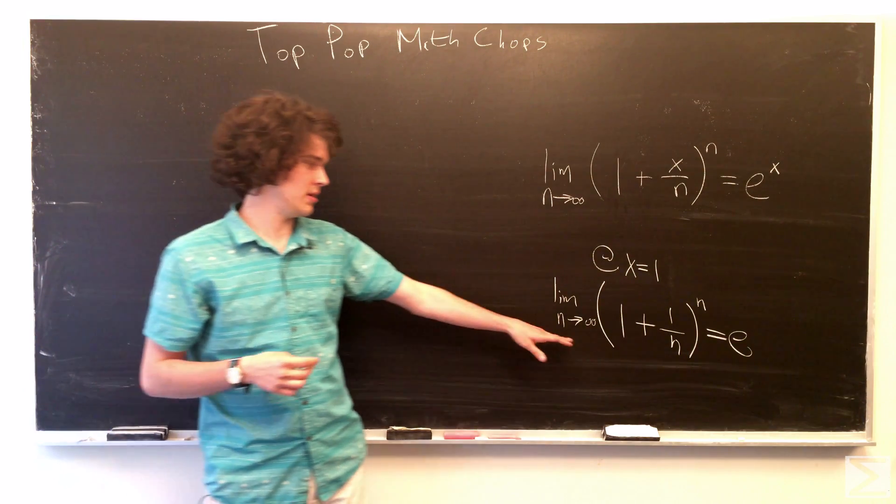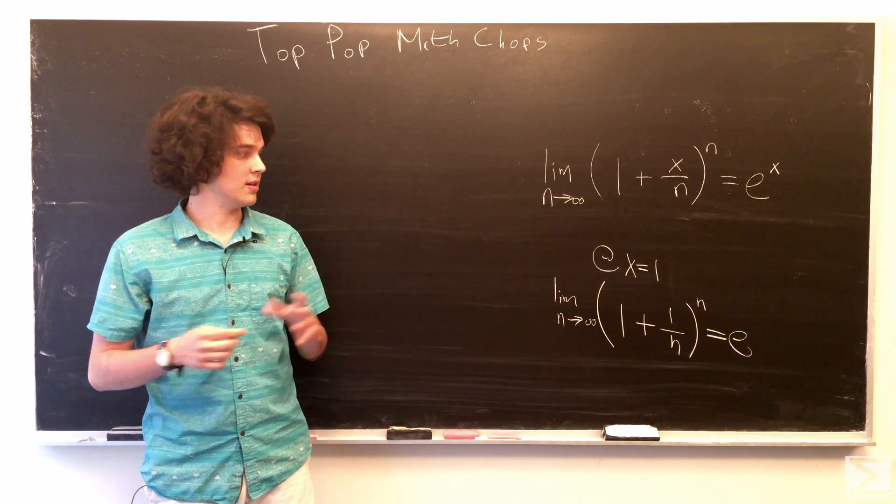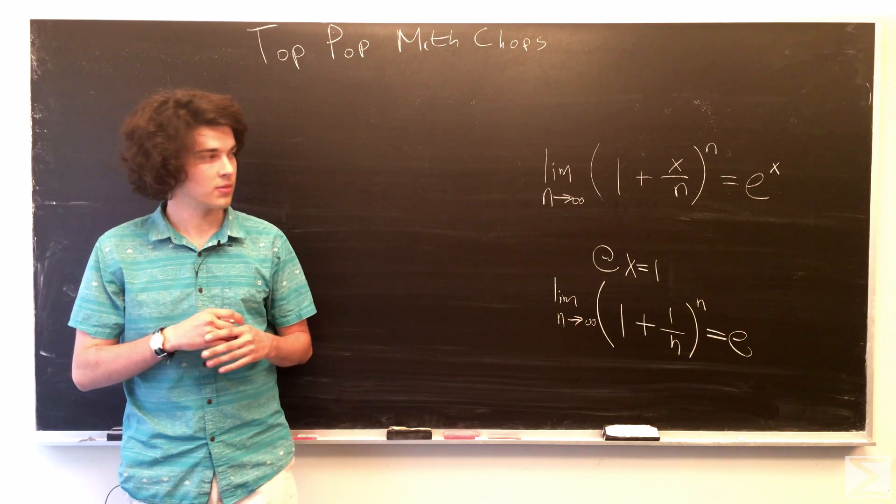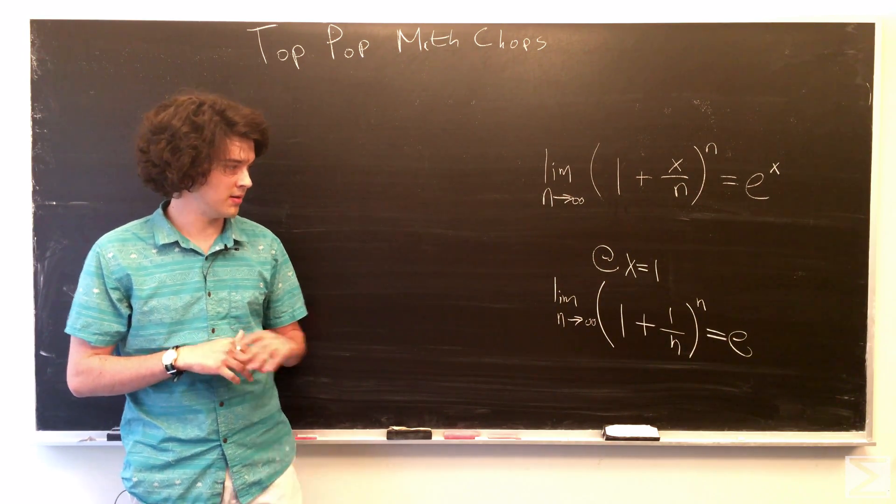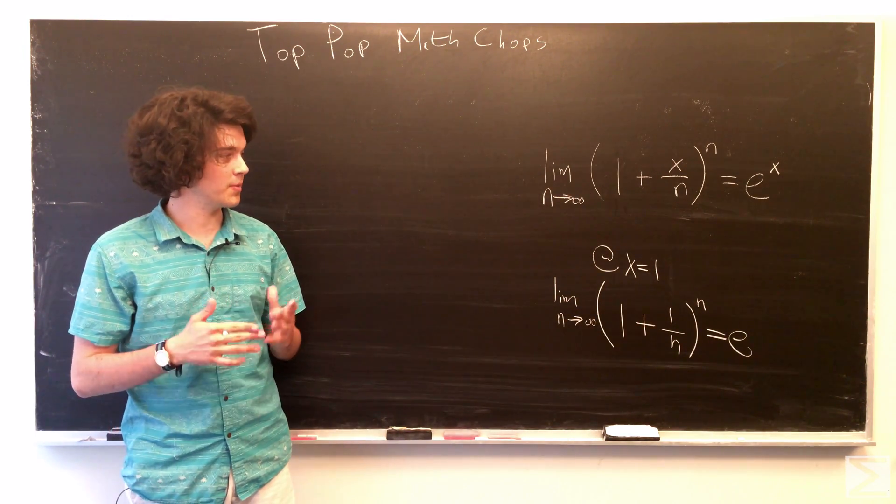where n is the number of times given, I think, in a year that you take interest on an amount of money. And when n goes to infinity, you get that number e.